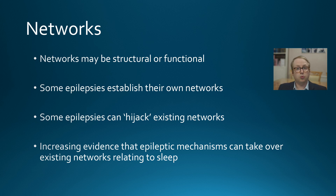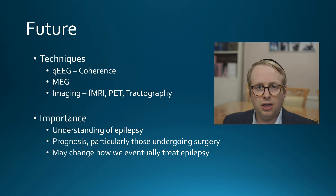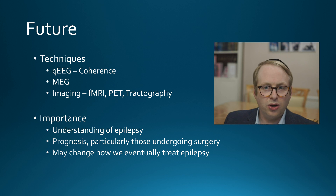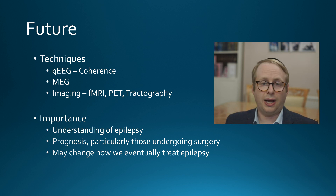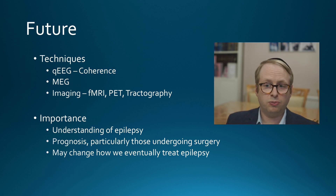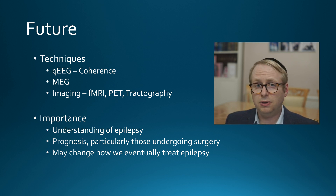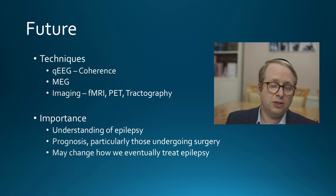There is increasing evidence that epileptic mechanisms can actually take over existing sleep-related networks, but it's only every so often that we can actually appreciate those discharges over sleep architecture. Going into the future, there are better techniques to identify how networks and epilepsy occur — qEEG to look quantitatively at frequencies and coherence, MEG using magnetic techniques to look at currents around the brain, and more advanced imaging such as functional MRI, FDG-PET, and tractography.